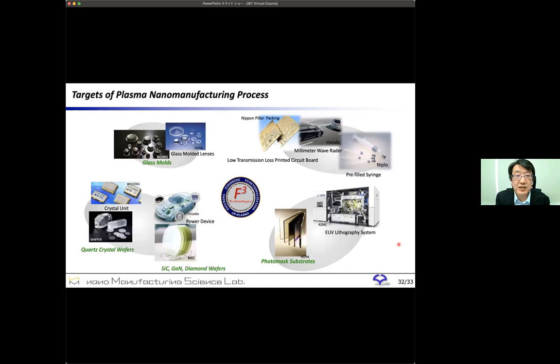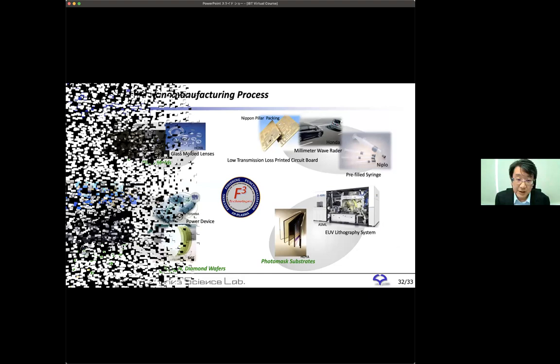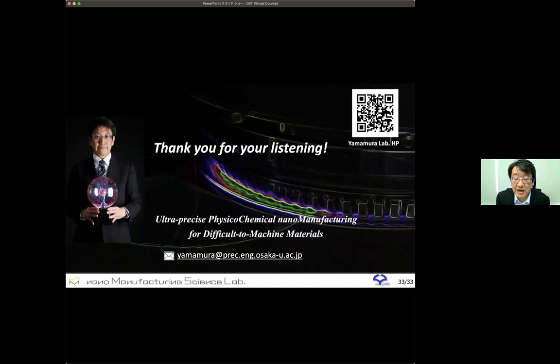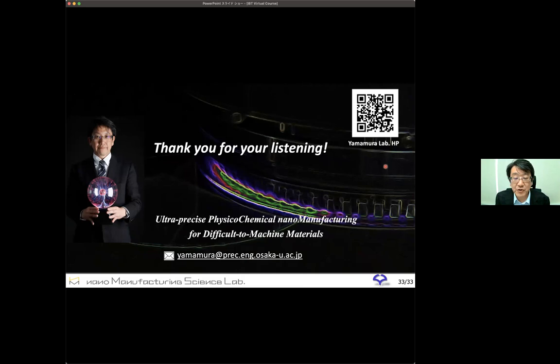These are the targets of nano manufacturing process based on plasma process. I strongly hope that the nano manufacturing process developed by us for these targets will be put to practical use in the near future, and we want to contribute to the development of humankind by our technology. That's all for my lecture. Thank you very much for your kind attention. If you have any questions, please send to my email address and please visit our laboratory's homepage for your reference.